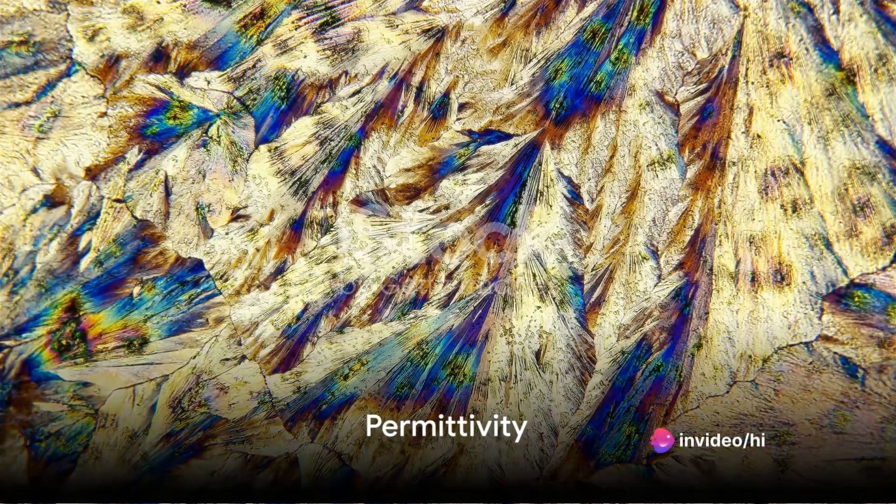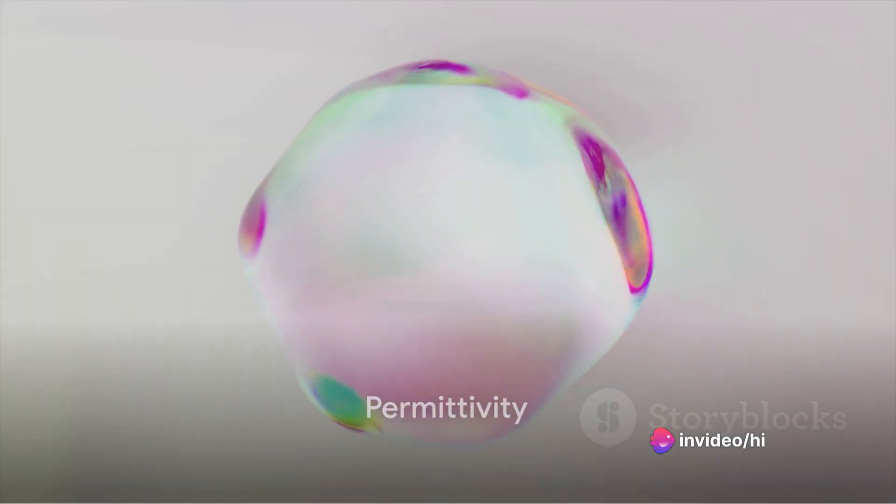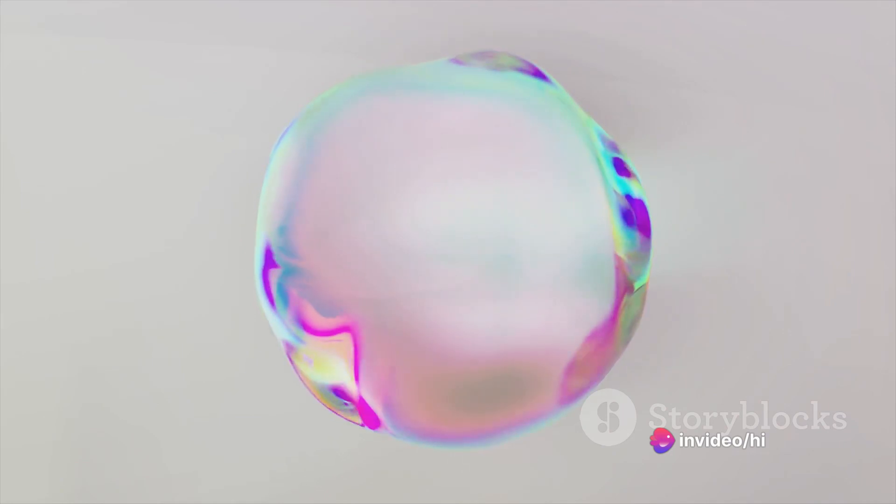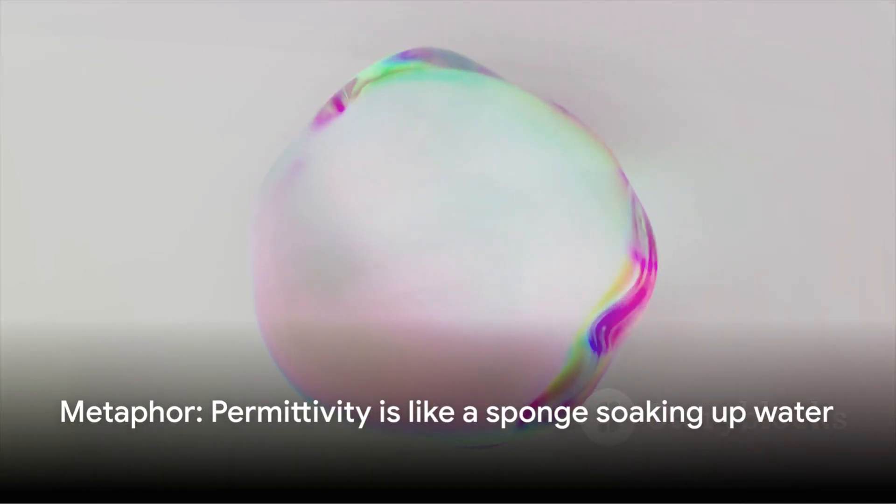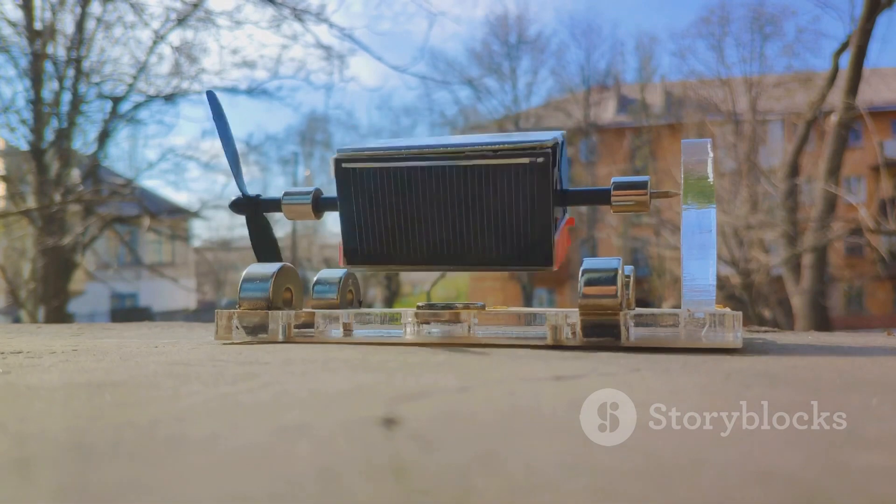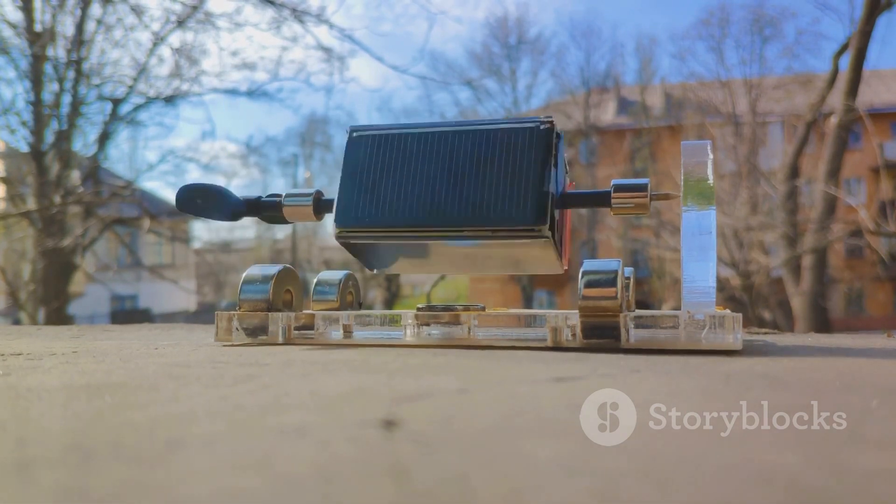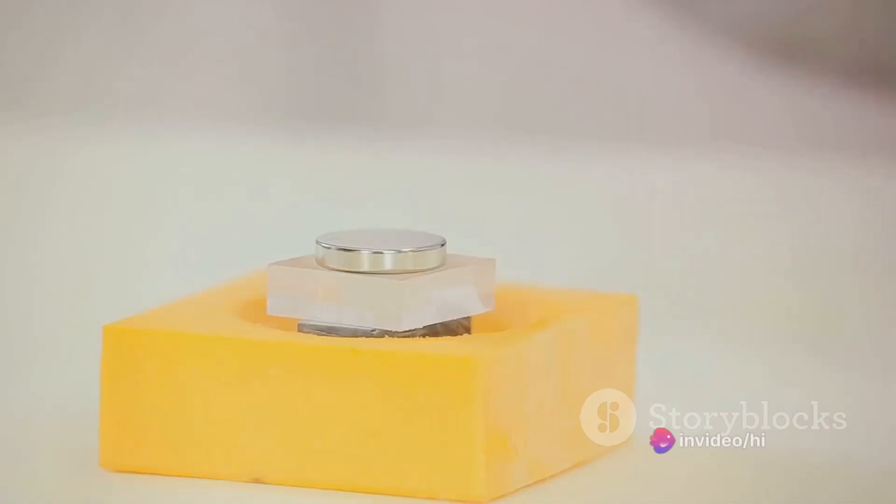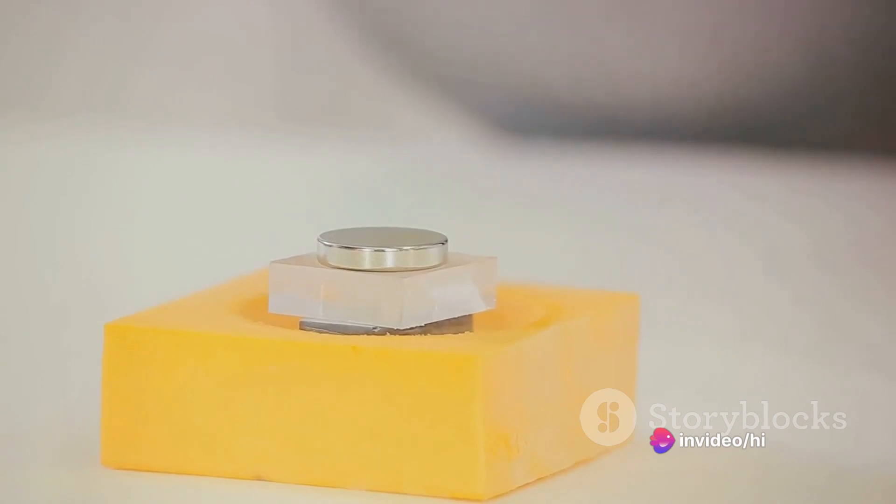Next, we have permittivity. It's a measure of how a material can be polarized by an electric field. It's akin to how well a sponge soaks up water. The better the sponge, the more water it can hold. Similarly, a material with high permittivity stores more electrical energy when subjected to an electric field.